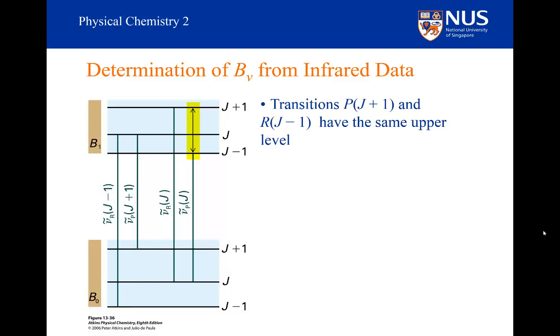Similarly, if we look at the two transitions on the right, they both start in the same initial rotational state but end in different rotational states. So the energy difference between them will only depend on B₁. By taking the right combinations of R and P lines, I can get information about B₀ and B₁.